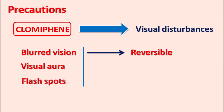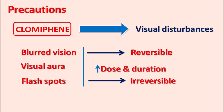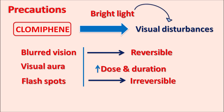Visual disturbances may increase with higher doses and longer duration of treatment. At high doses used for long-term treatment, the visual disturbances produced by clomiphene can become irreversible. Ophthalmic examination should be performed whenever visual disturbances are observed, and the drug should be stopped if necessary to prevent further complications. These disturbances are particularly more pronounced in the presence of bright light.